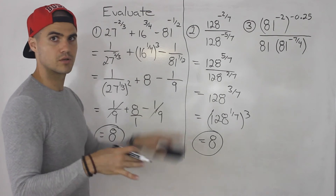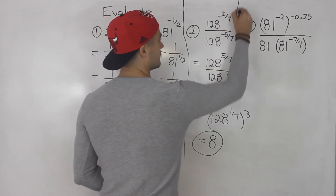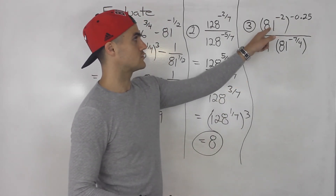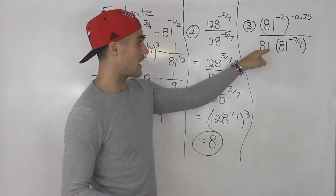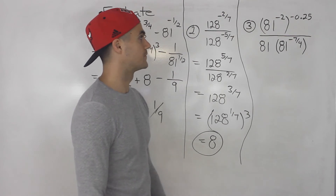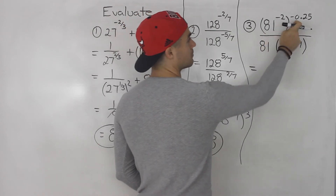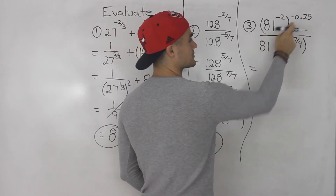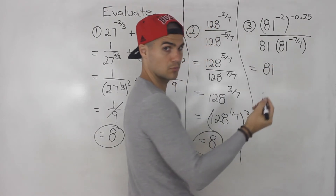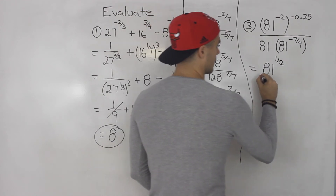You could check all of these — plug them in your calculator and make sure you're getting these final answers. Finally, number 3: we have 81 to the power of negative 2, to the power of negative 0.25, all over 81 times 81 to the power of negative 7 over 4. This one's a little more complex, but still not bad.